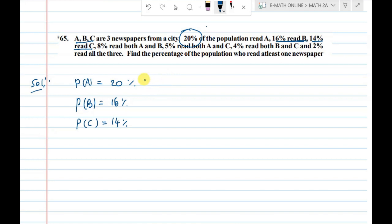Next, 8% read both A and B. Next, 5% read both A and C. Same thing, P of A intersection C equal to 5%. Next, 4% read both B and C. B intersection C is 4%.